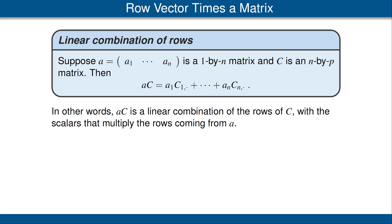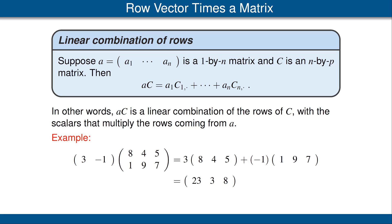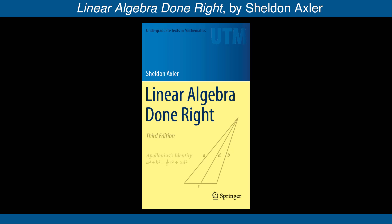Sometimes a matrix with only one row is called a row vector. We conclude this video by giving a result for multiplying a row vector by a matrix. If A is a row vector and C is a matrix, then A times C is a linear combination of the rows of C, with the scalars multiplying the rows coming from A. For example, here we have a 1 by 2 row vector (3, negative 1) multiplied by a 2 by 3 matrix, giving a 1 by 3 row vector. We take 3 times the first row plus negative 1 times the second row, with 3 and negative 1 coming from the row vector, and compute the result. This concludes the final part of the video on matrices.